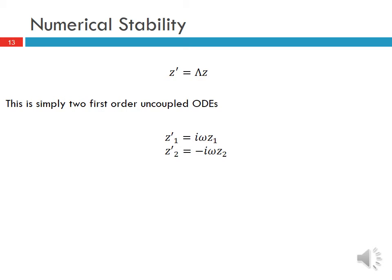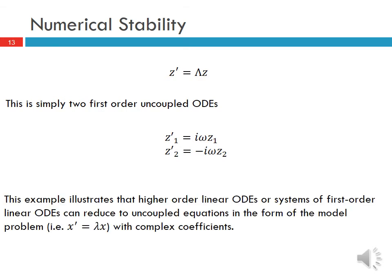This gives two first-order uncoupled ODEs: Z₁' = iω·Z₁ and Z₂' = −iω·Z₂. These are both in the form of the model equation x' = λx. This example illustrates that higher-order ODEs or systems of first-order ODEs can reduce to uncoupled equations in the form of the model problem with complex coefficients, demonstrating that our stability analysis approach for a single ODE can be extended to systems of ODEs or higher-order ODEs.